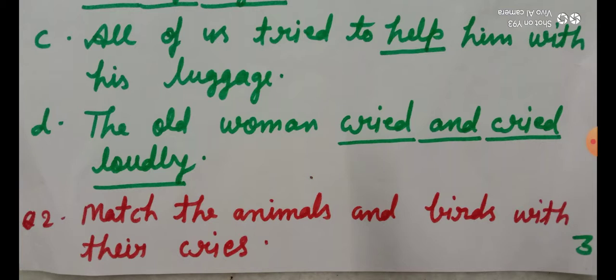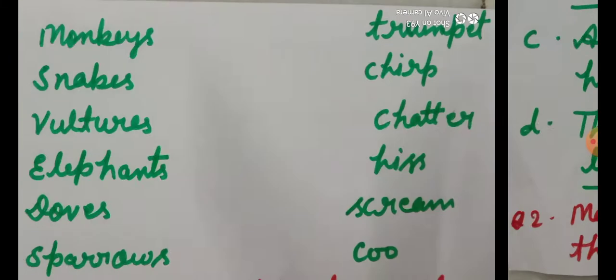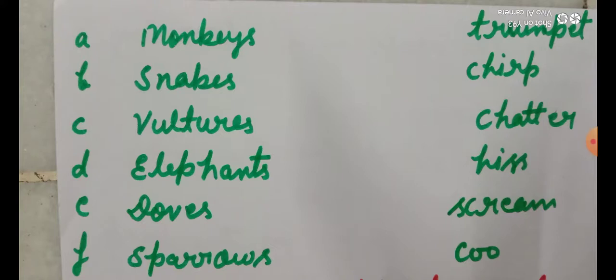Second number, match the animals and birds with their cries. Ismei animals aur birds ko unki awazun se match karna hai, and you will write the correct answer in front of the word. You will not draw the line.